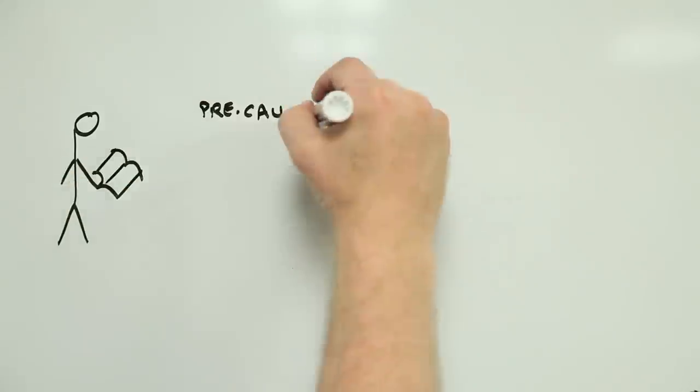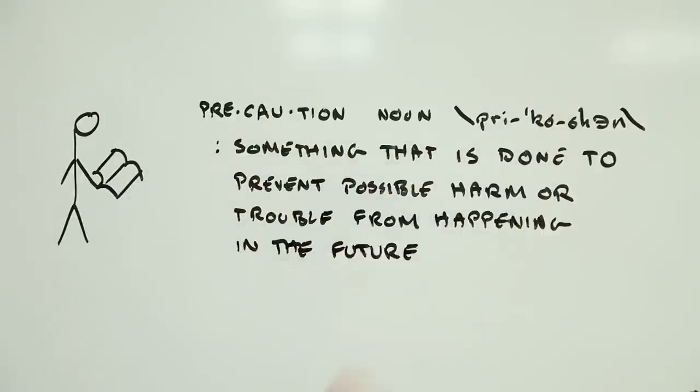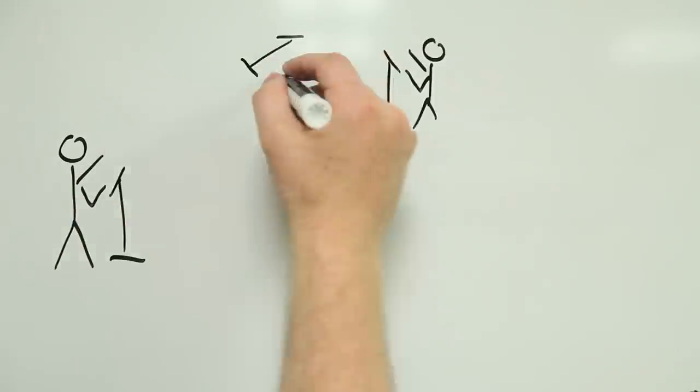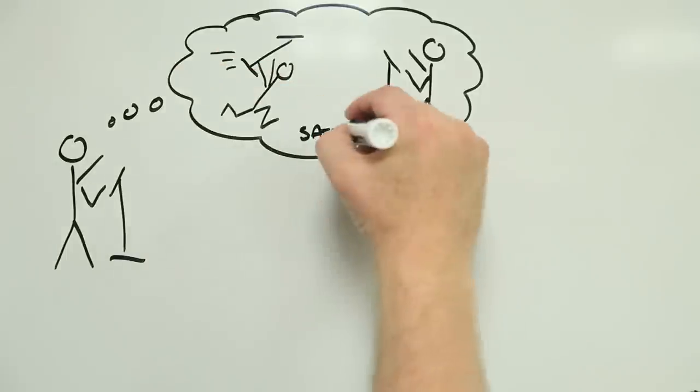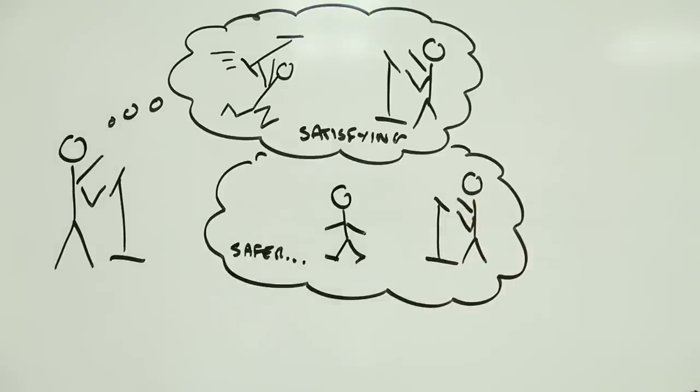According to the Merriam-Webster Dictionary, precaution is something that is done to prevent possible harm or trouble from happening in the future. So every time we ask ourselves what the consequences of our actions might be, and what we can do to reduce the likelihood of consequences we don't like, we are exercising precaution.